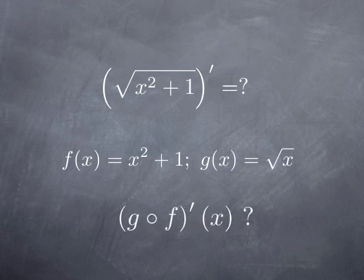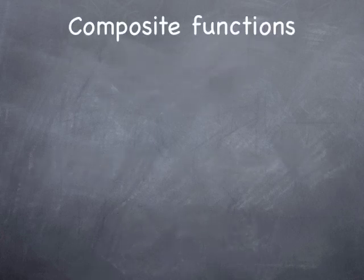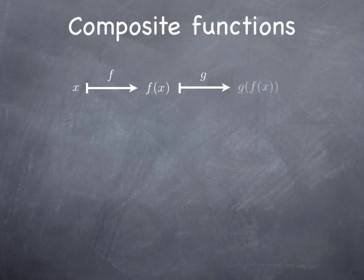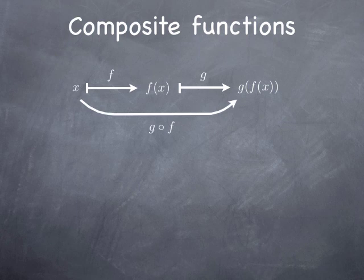So even though you probably know how composite functions are formed, I will go over a quick recap on this type of functions. So if x is a certain real number and I apply a function f to it, I obtain another number f of x, which in turn can be the input for another function g. In other words, I can evaluate g at the number f of x and obtain another real number g of f of x. This way we define a function that associates to x the number g of f of x, and we call this new function g of f — a composite of g and f.